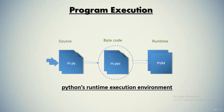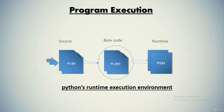When you instruct Python to run your script, there are a few steps that happen behind the scenes before your code actually starts executing. Specifically, it is first compiled to something called bytecode and then routed to something called a virtual machine. Internally, Python first compiles your source code into bytecode — a lower-level, platform-independent representation of your source code. Python translates each source statement into a group of bytecode instructions by decomposing them into individual steps.